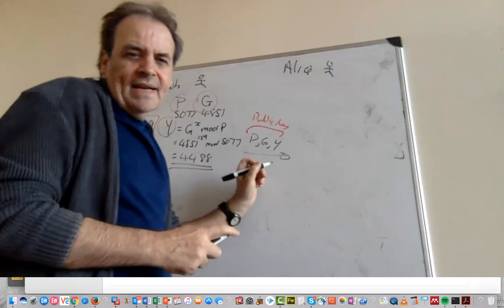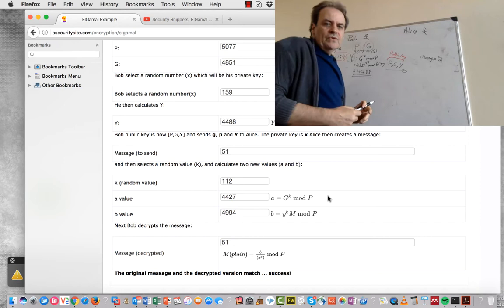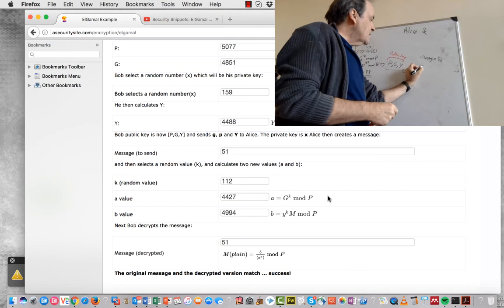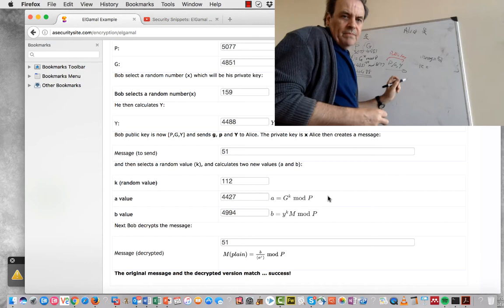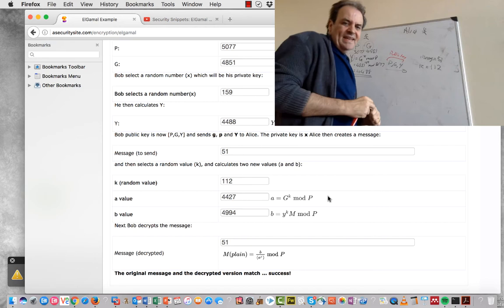Let's say the message is equal to 51 that we're going to send. So Alice is going to use these values to be able to create the cipher. So she creates her own random number. In this case we'll use a random number of 112. Hopefully Bob doesn't need to know the value of K but it's not going to be used in the calculation.